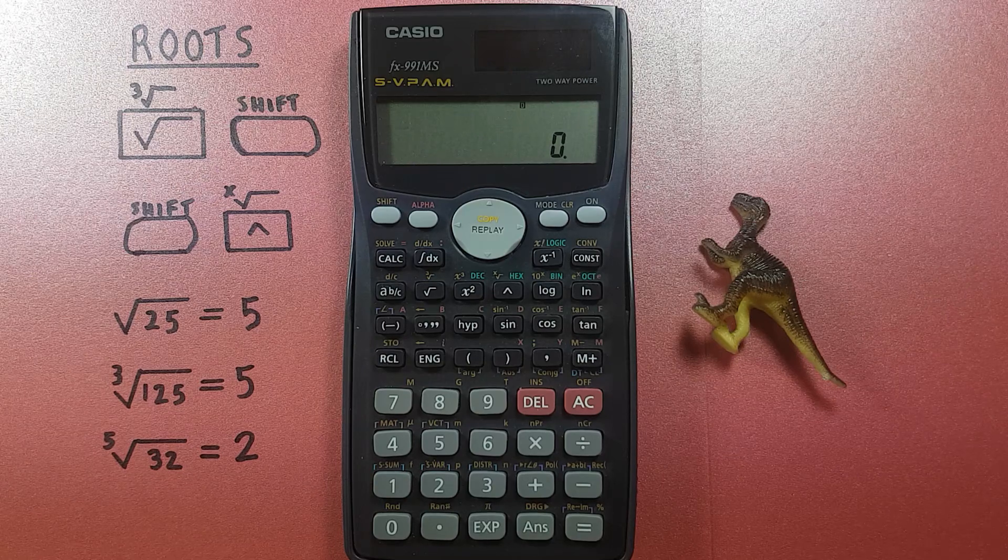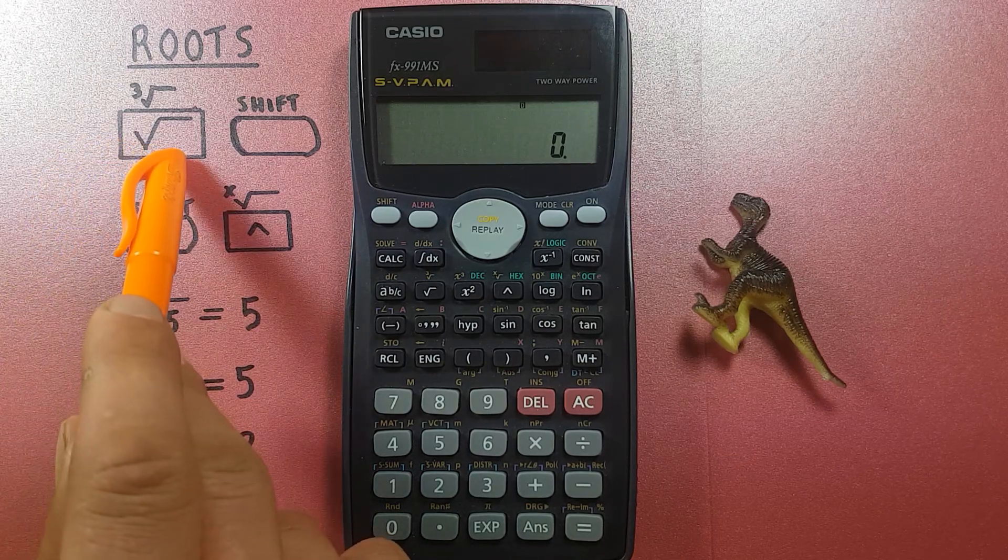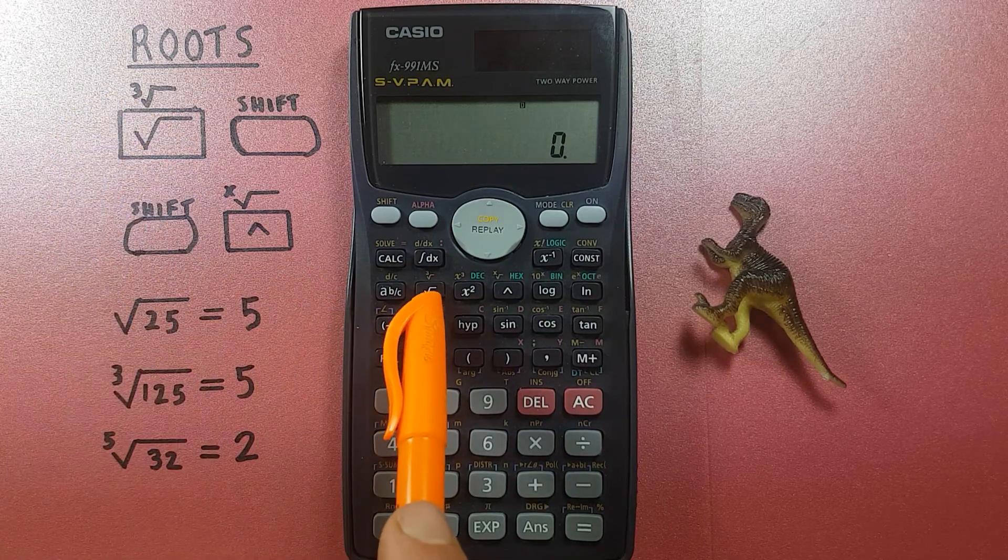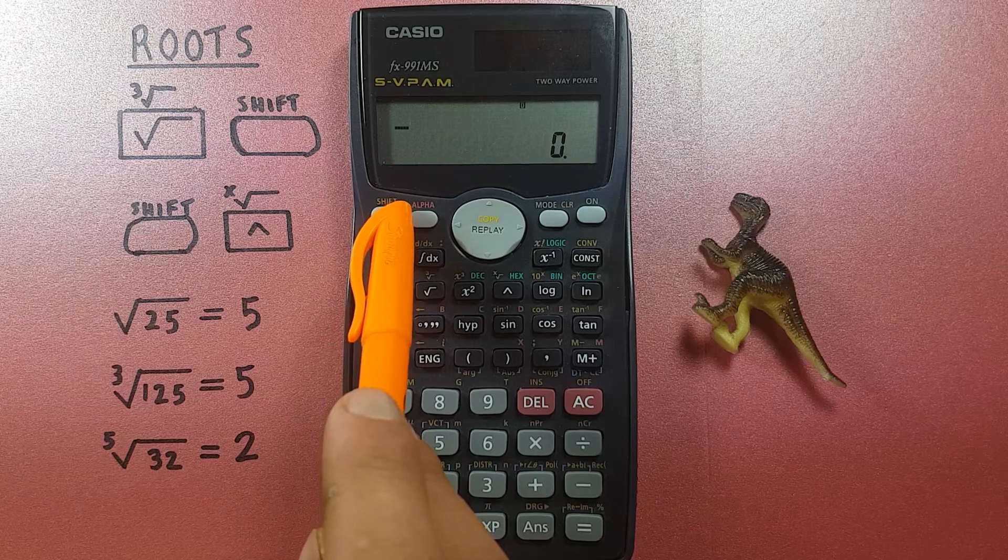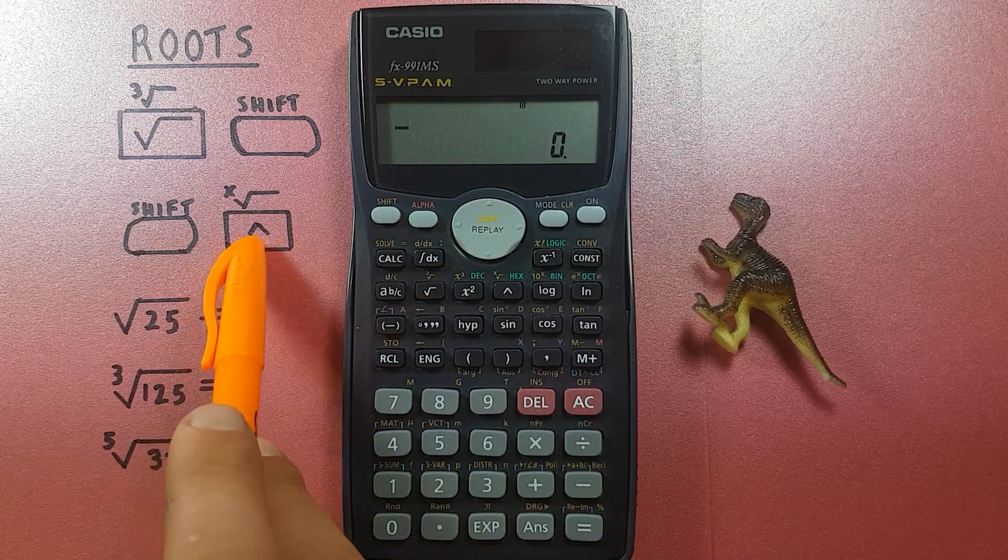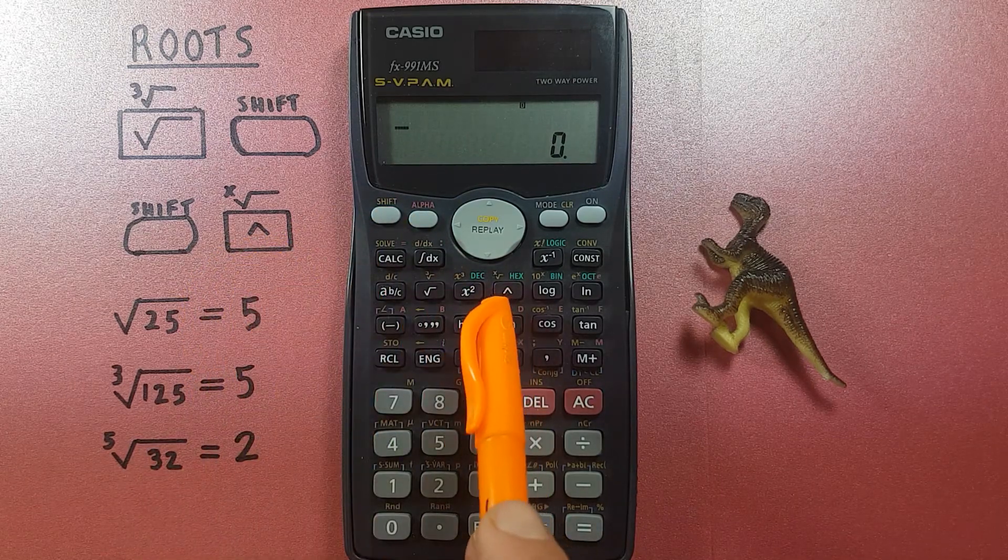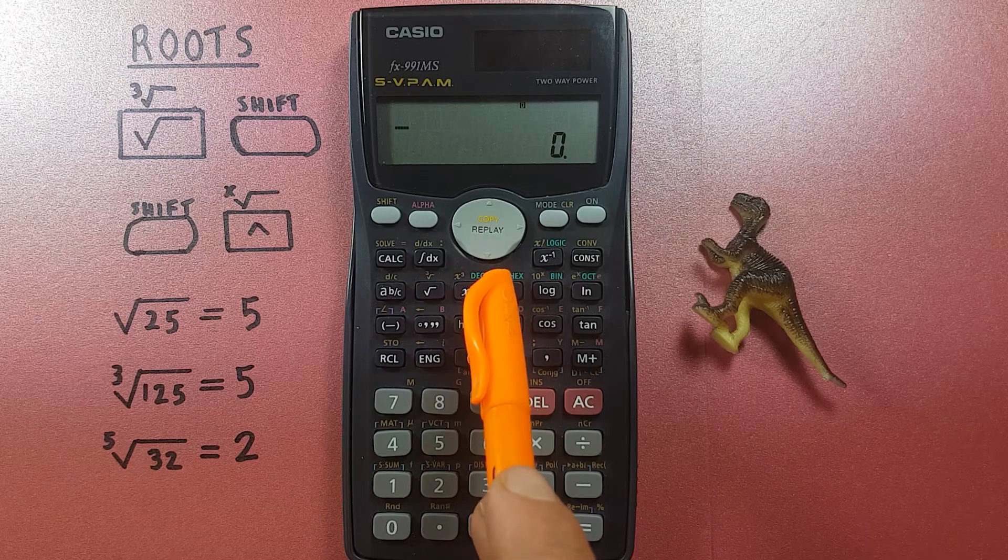To do this we'll be using the square root button with the second function of the cube root located here, the shift button located here, and the up arrow or caret key button with the second function of the x-th root right here.